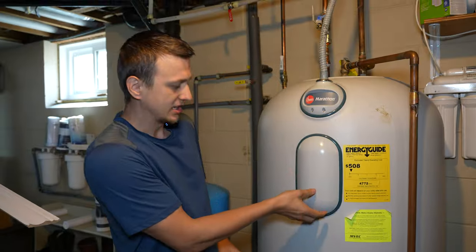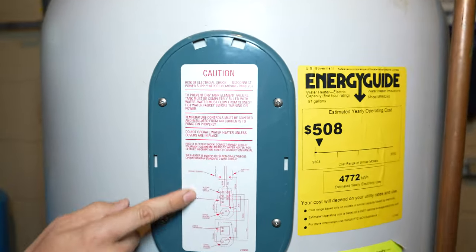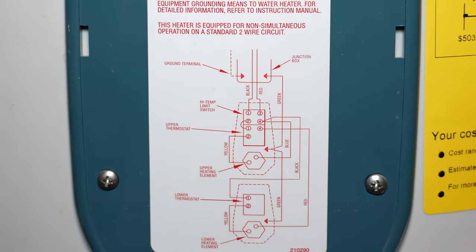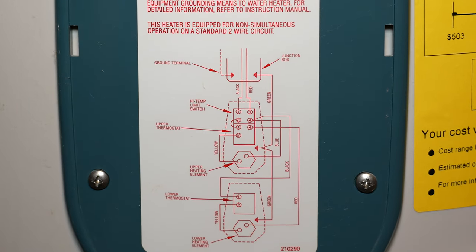So if you take the top cover off on a Rheem water heater, you have a little wiring diagram right here that shows how this thing works. And I actually have a print off of this. So let's go to a table and see if we can trace some of this stuff to figure out how it works.